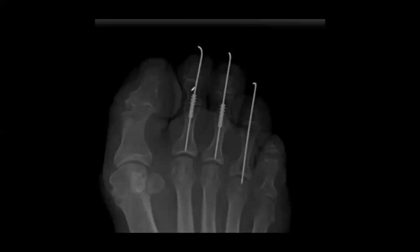Metallic PIPJ implants can be cannulated with K-wires running down the middle. K-wires are used on toes for PFG arthrodesis, and can be driven across the MPJ for added stability. Post-operatively, compare to prior images to check for backed-out wires. K-wire sizes for toes are usually 0.054 or 0.062; the tiny implants require 0.035 wires.